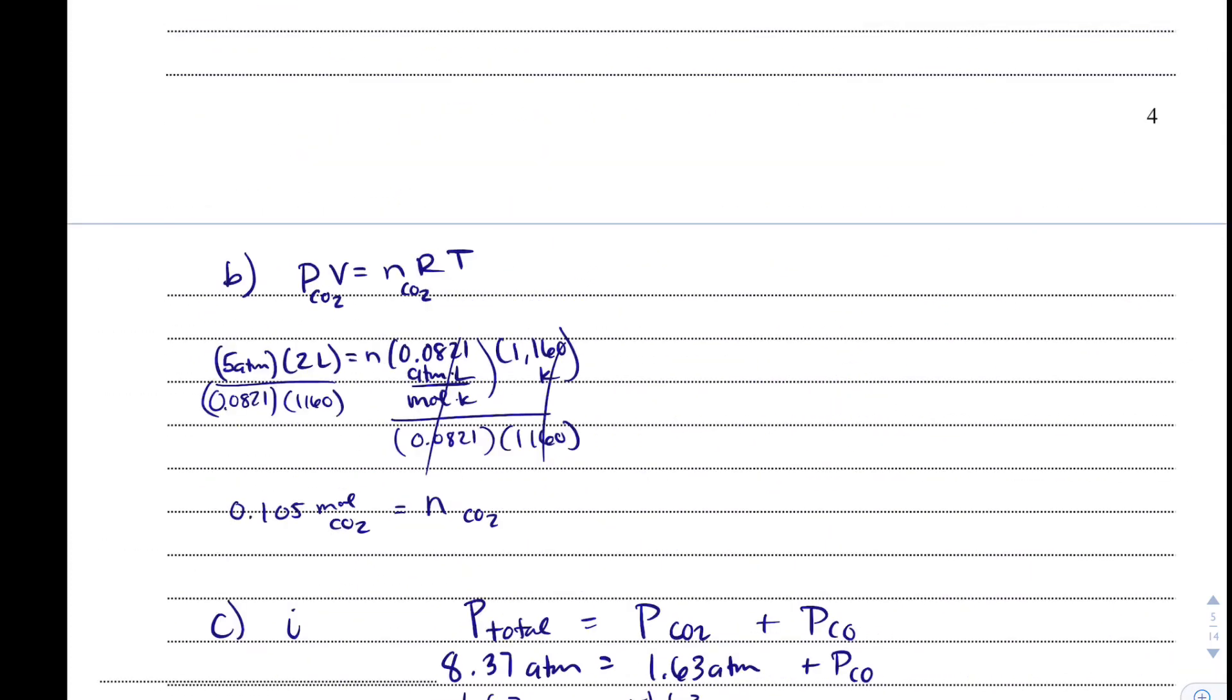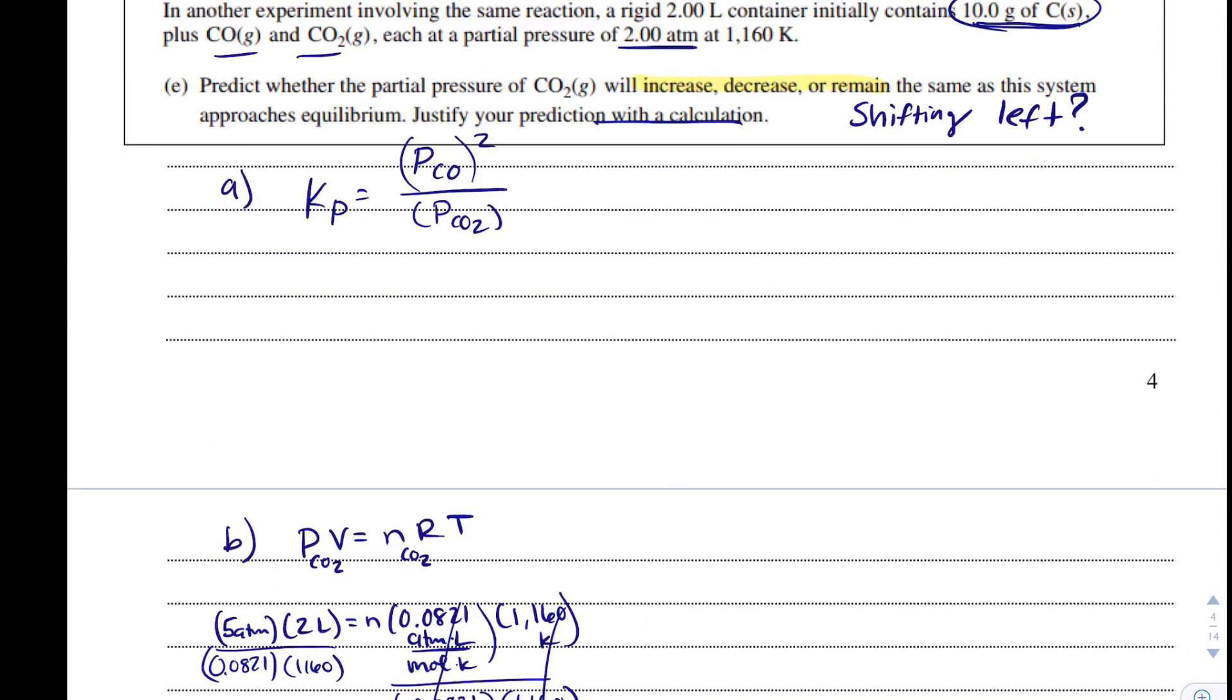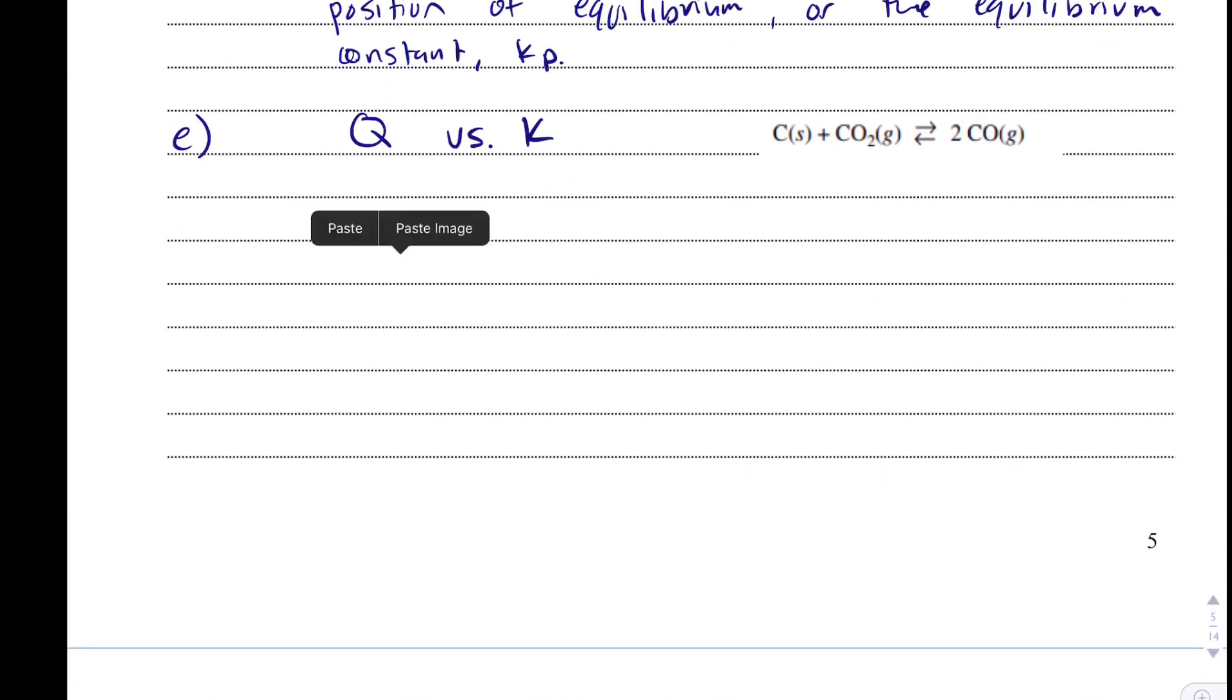So, to get Q, this is specifically QP, I'm going to do copy, paste, and I'm going to get rid of K and I'm just going to switch it to Q. Notice that we're going to have two atmospheres as our numerator and two atmospheres as our denominator and notice, even though they gave us 10 grams of carbon, it's a solid, so it's not going to be included. And so, when I solve for this, I'm going to get 2 as my Q.